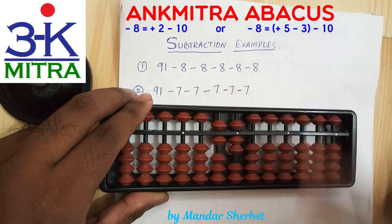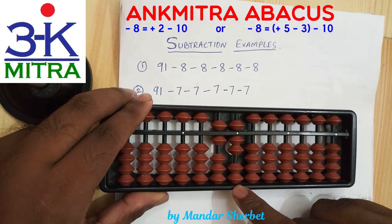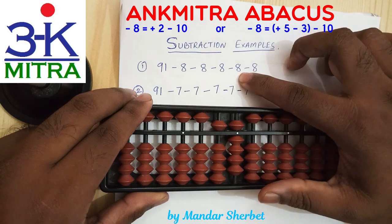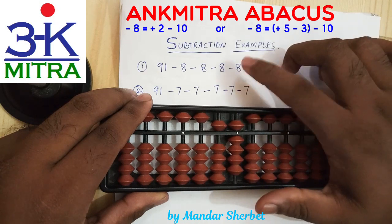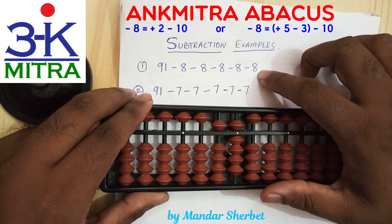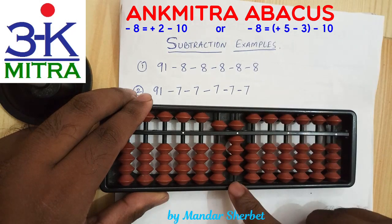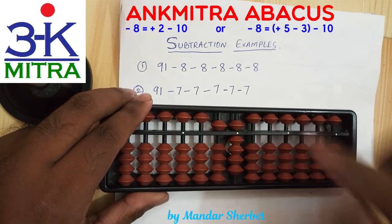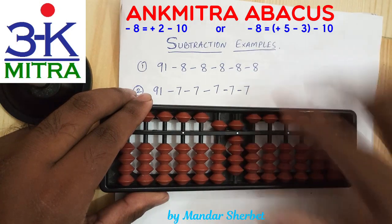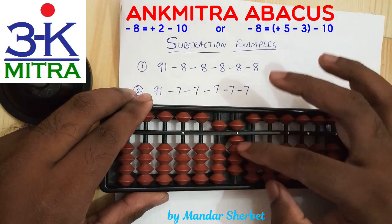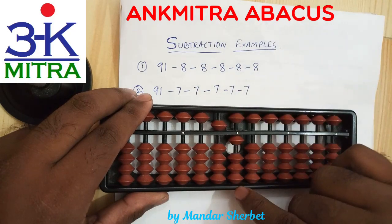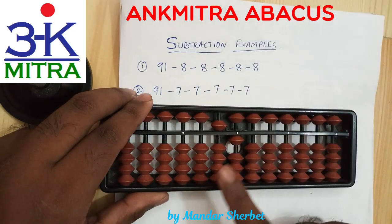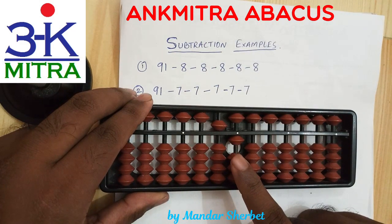Moving to the fourth 8 — we don't have 8 beads, so we add 2 and subtract 10 to finish the subtraction of the fourth 8. Moving to the last subtraction of 8 — do we have 8 beads available? Yes, this time we do. So we can subtract 8 directly without any formula. After subtracting all five 8s from 91, the answer we have is 51.